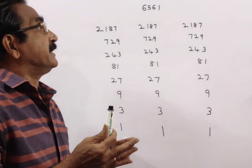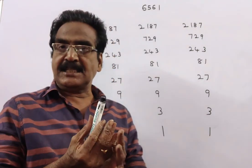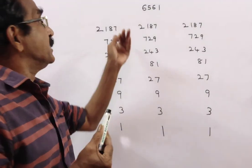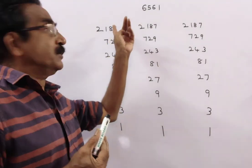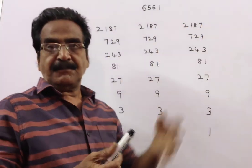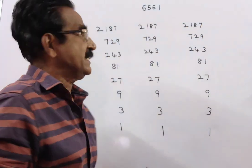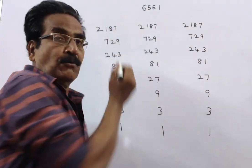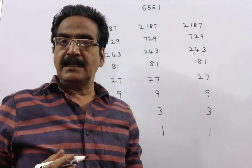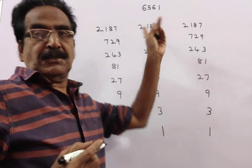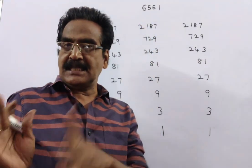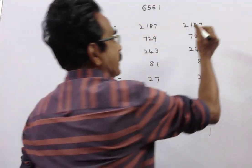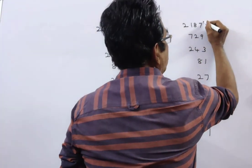First, let us make the 6561 balls into three equal groups. Each group contains 2187 balls. Let us weigh these two groups. If these two groups show the same balance, then the heavier ball must be in the third group.